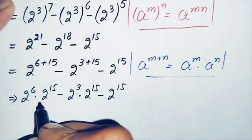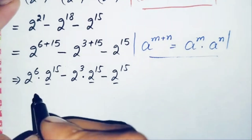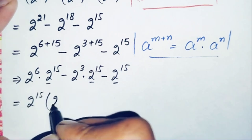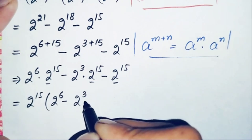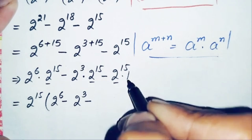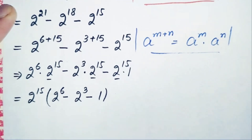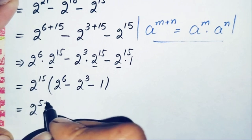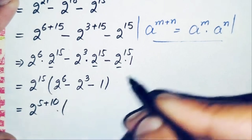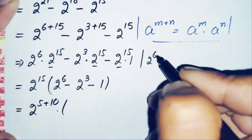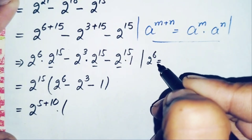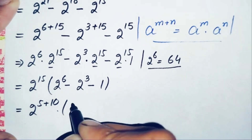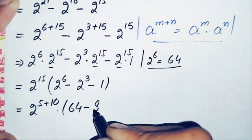Now looking at all the terms, 2 raised to power 15 is common, so we factor it out. This becomes 2 raised to power 15 times the quantity: 2 raised to power 6, minus 2 raised to power 3, minus 1. The value of 2 raised to power 6: 2×2=4, 4×2=8, 8×2=16, 16×2=32, 32×2=64. So 2 raised to power 6 is 64, and 2 raised to power 3 is 8. The bracket becomes 64 minus 8 minus 1.